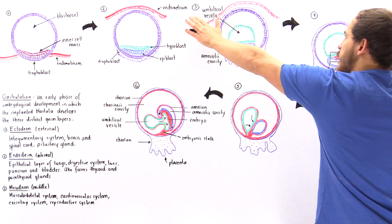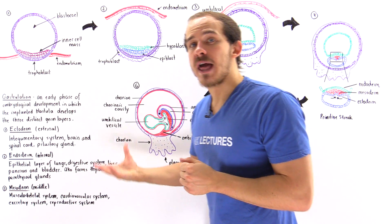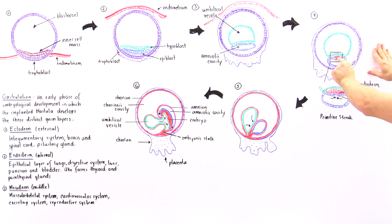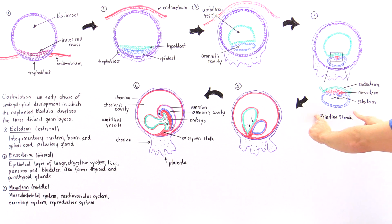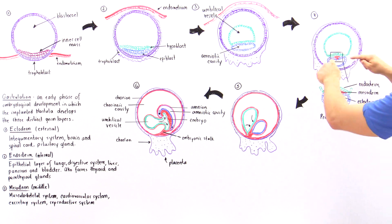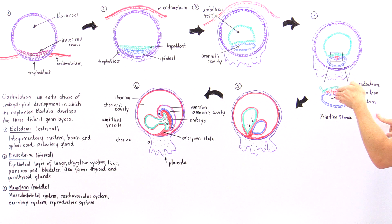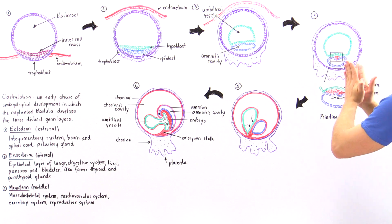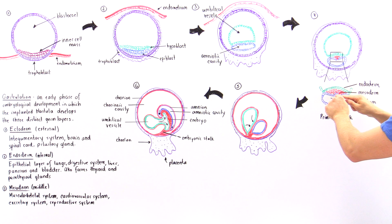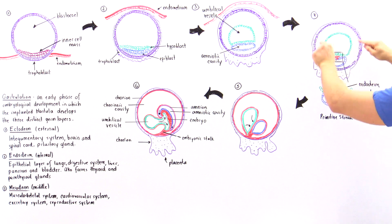Going from diagram three to diagram four: something important takes place — we form the mesoderm, the middle layer of the developing embryo, shown as the red cells. Zooming in, the blue epiblast layer undergoes invagination and forms the primitive streak. Along the primitive streak — the axis where invagination takes place — the blue cells invaginate and move inward, and as they do so, these blue cells develop into the red cells that make up the mesoderm. As this pushing process takes place, all the red mesodermal cells are pushed around the entire structure.